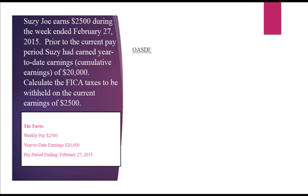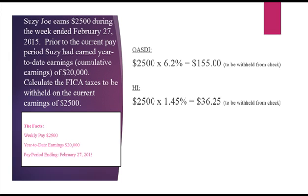How to calculate the FICA taxes for Suzie Joe: For OASDI, $2,500 times 6.2% equals $155 to be withheld from the check. For HI, $2,500 times 1.45% equals $36.25 to be withheld from the employee check. Total FICA tax to be withheld is $191.25. The cumulative earnings figure is important to ensure we have not reached the wage base for OASDI.